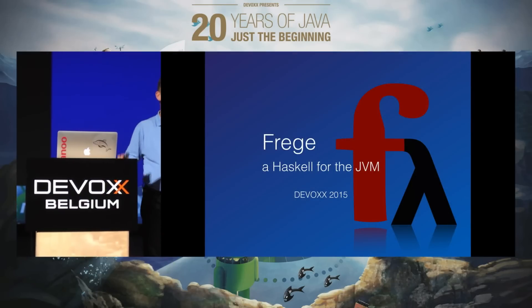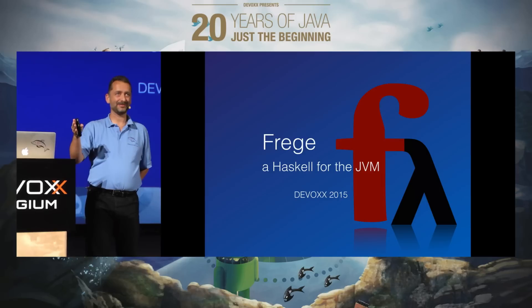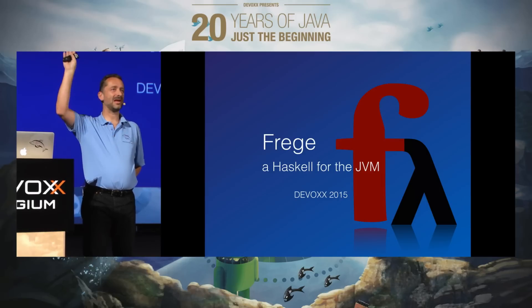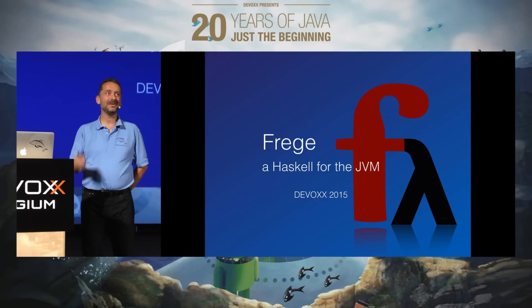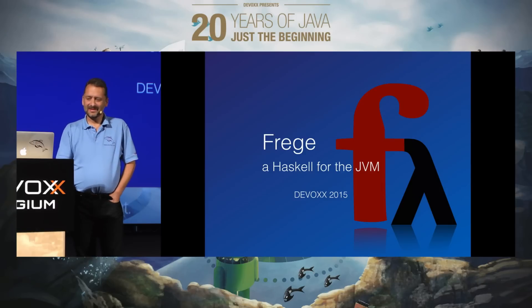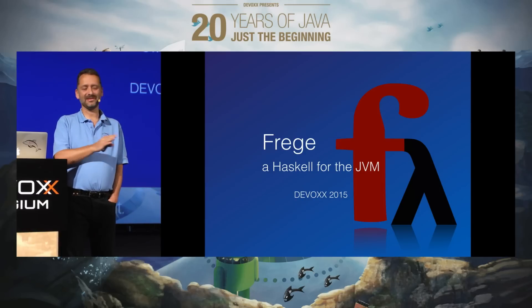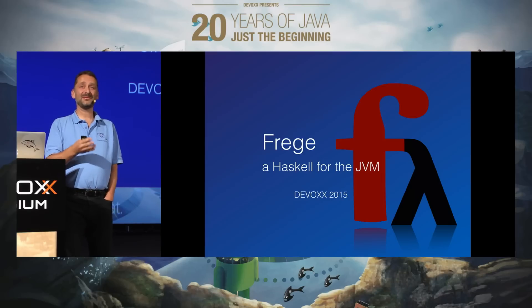Frege is a Haskell for the JVM. Who in this room is a Java developer? Who has ever done any kind of Haskell, ML, or OCaml? Almost more than half of you — awesome. Frege is a Haskell for the JVM because, arguably, Haskell is maybe not the best language design, but a masterpiece of language design. And the JVM is a masterpiece of engineering. We are trying to bring both together.